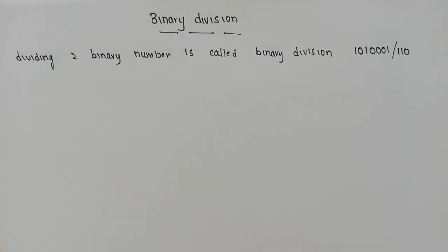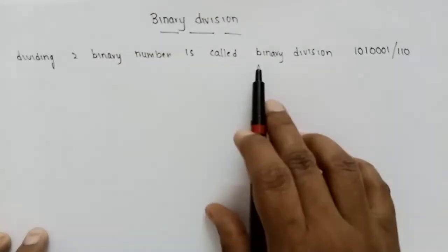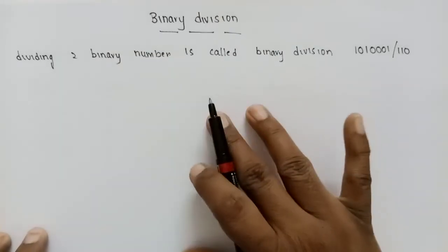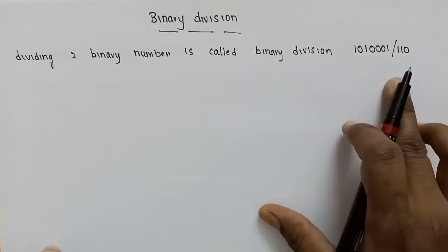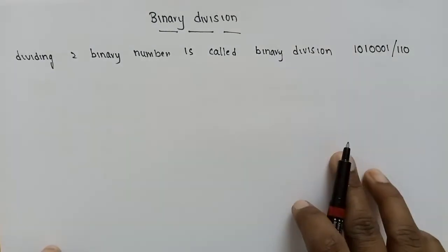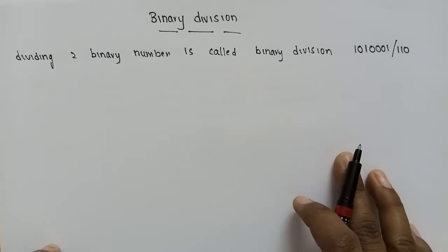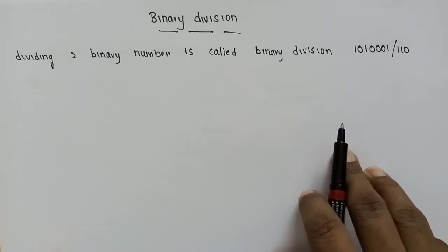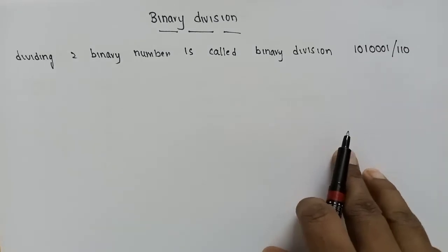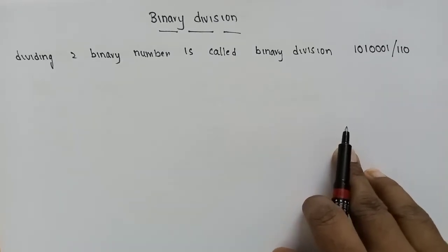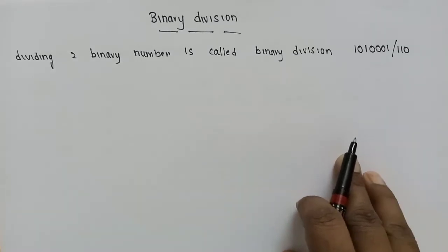Binary division is dividing two binary numbers — that is called binary division. This division is not a normal division; we use the binary subtraction concept.